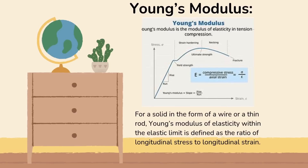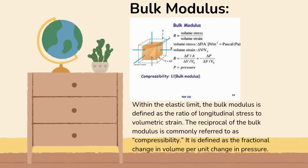Next is Young's modulus. For a solid in the form of a wire or a thin rod, Young's modulus of elasticity within the elastic limit is defined as the ratio of longitudinal stress to longitudinal strain. Bulk modulus: within the elastic limit, the bulk modulus is defined as the ratio of volumetric stress to volumetric strain. The reciprocal of the bulk modulus is commonly referred to as compressibility. It is defined as the fractional change in volume per unit change in pressure.